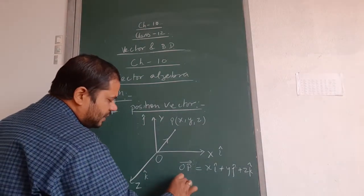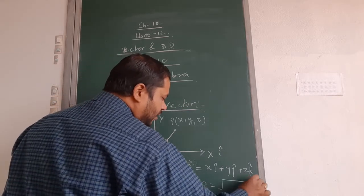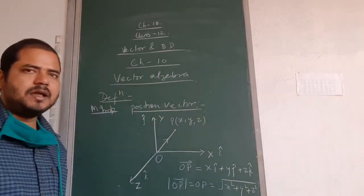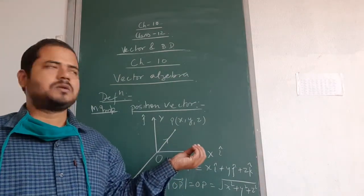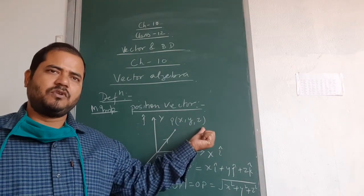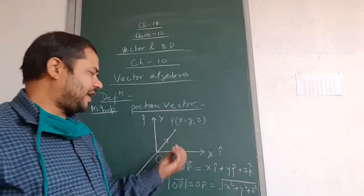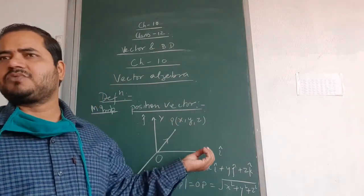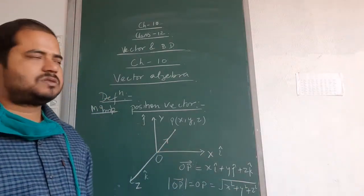So if you want to find the position vector of any point, you can simply write OP. Suppose the point is (2, 3, 4), then OP = 2î + 3ĵ + 4k̂. If the point is (A, B, C), then OP = Aî + Bĵ + Ck̂, and its magnitude is √(A² + B² + C²). Please note it down.